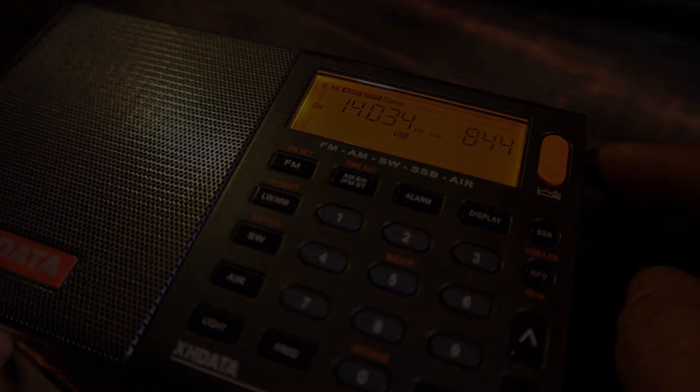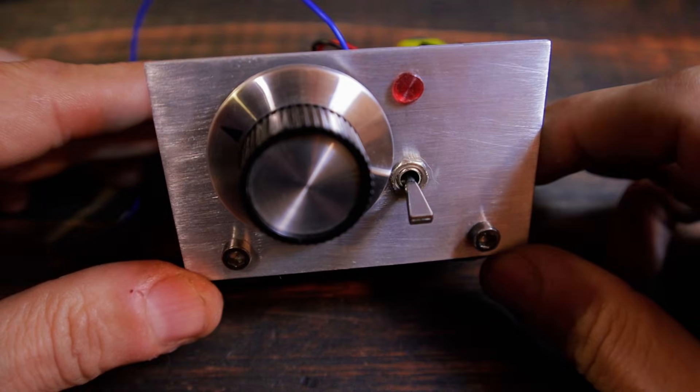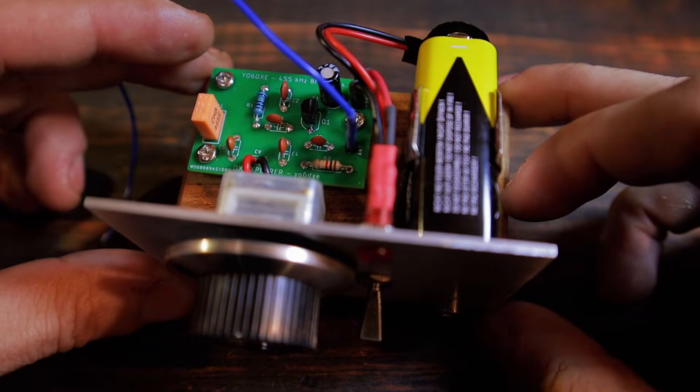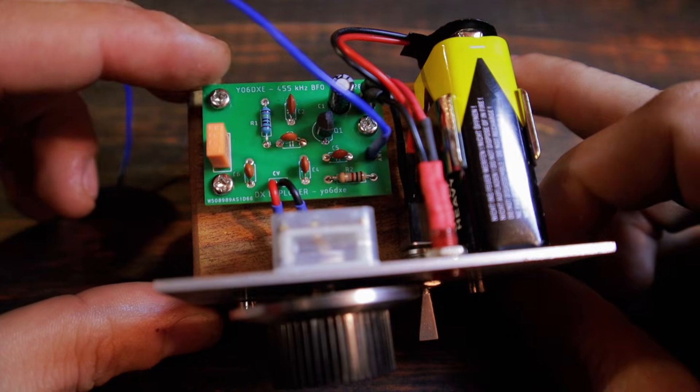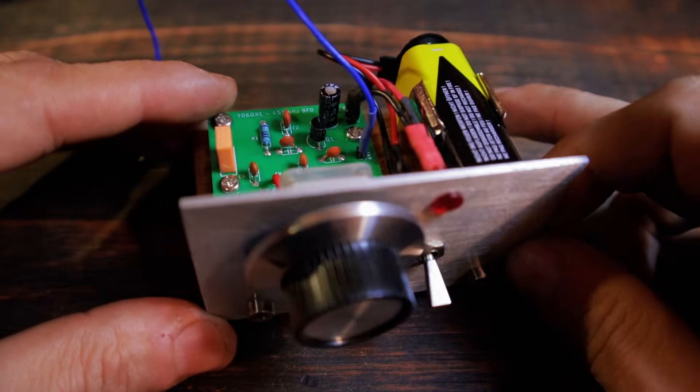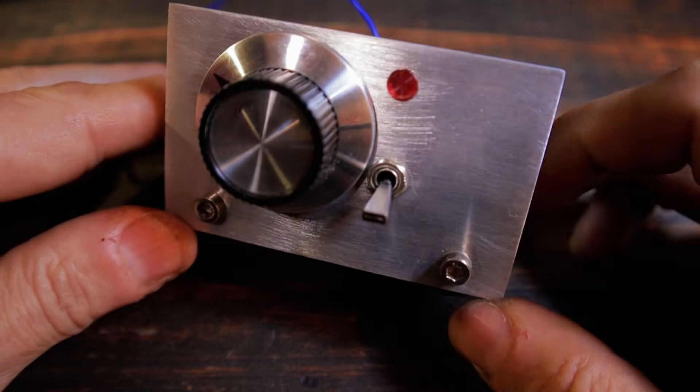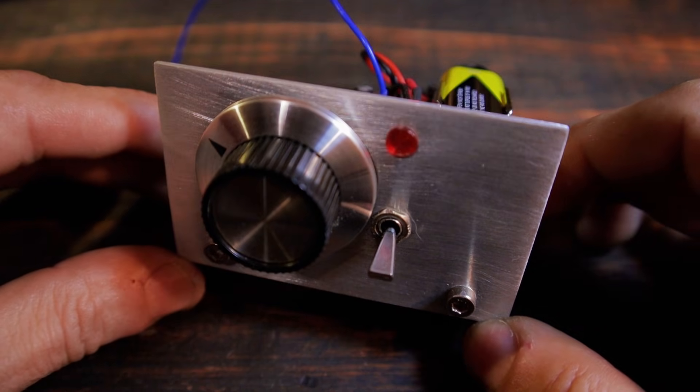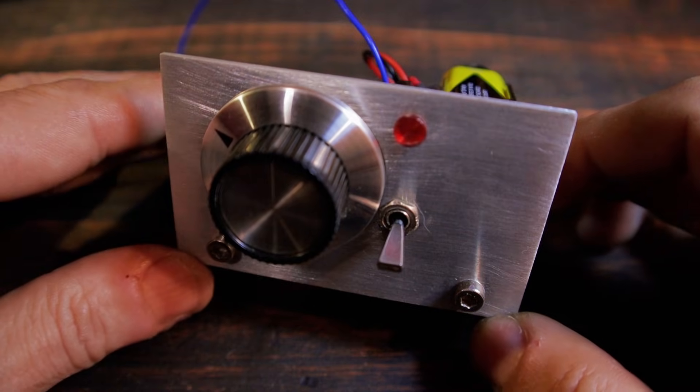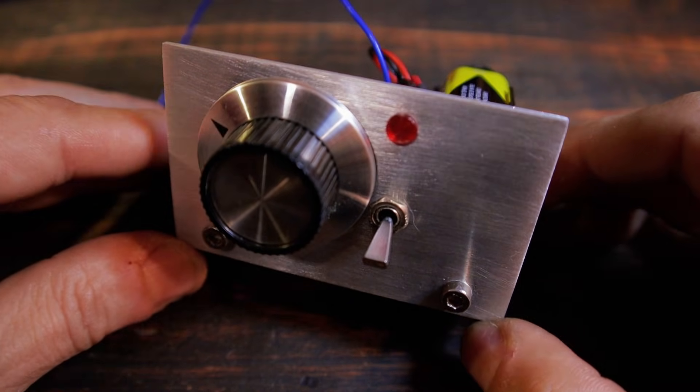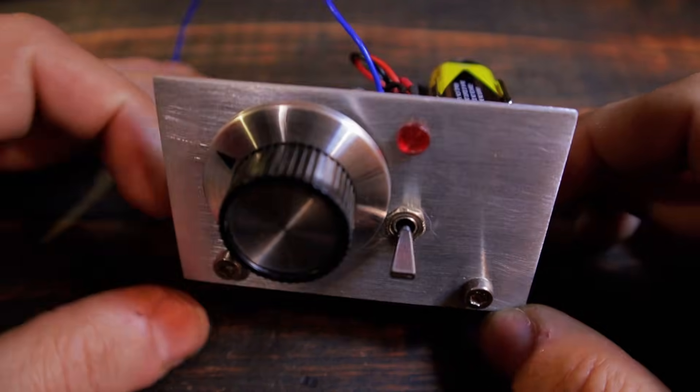So I think you get the idea. I can't believe that I don't have an older AM broadcast band receiver that I can test this thing with. But I'll definitely either somehow acquire one and test it to see how it works. If not then I'll just build a simple heterodyne receiver with 455 kilohertz intermediate frequency so I can test this BFO.